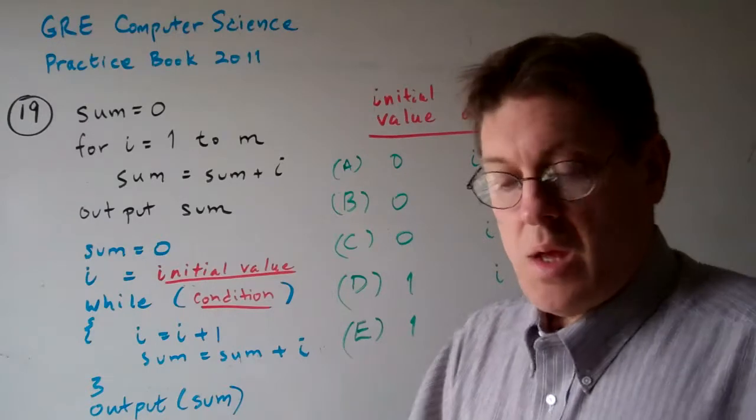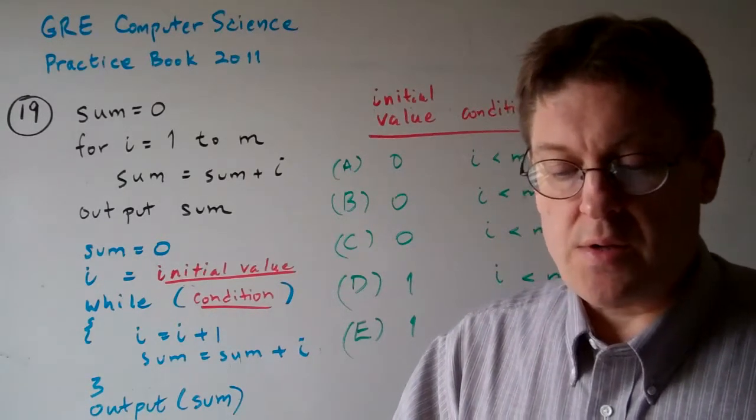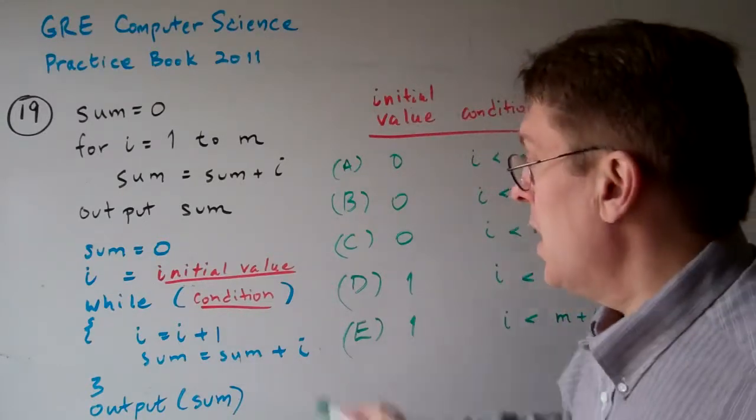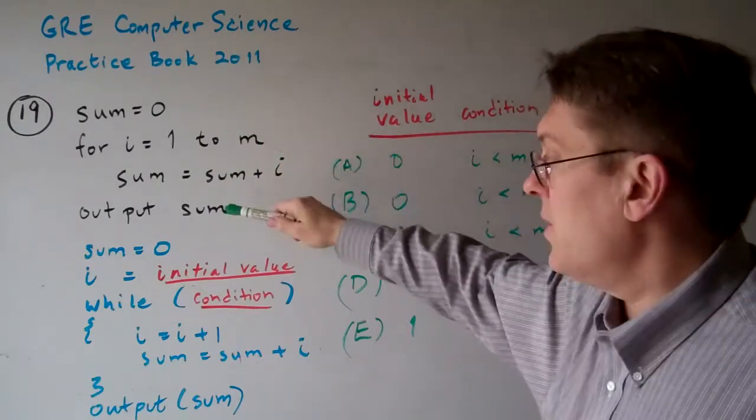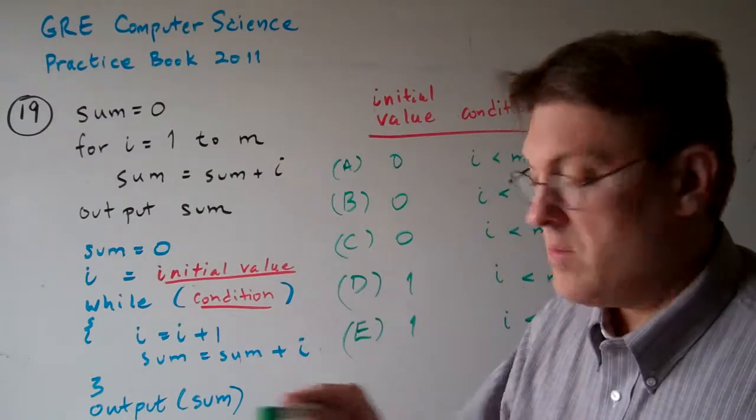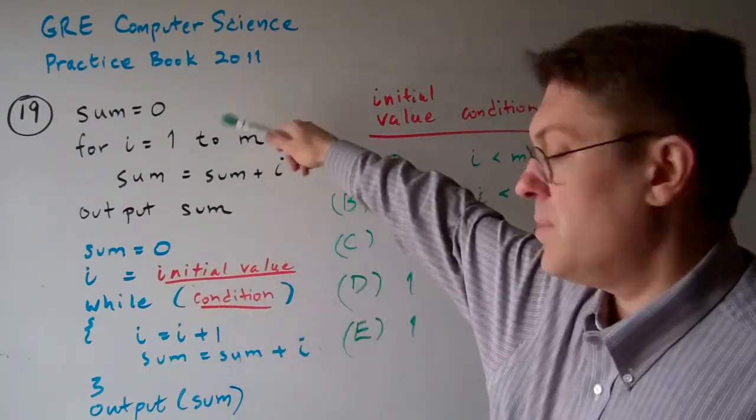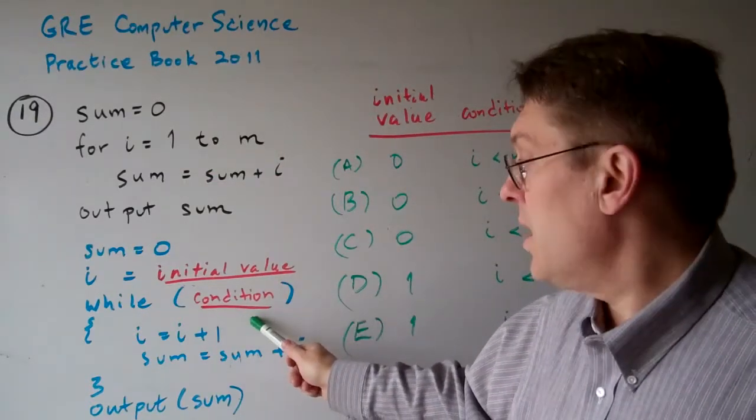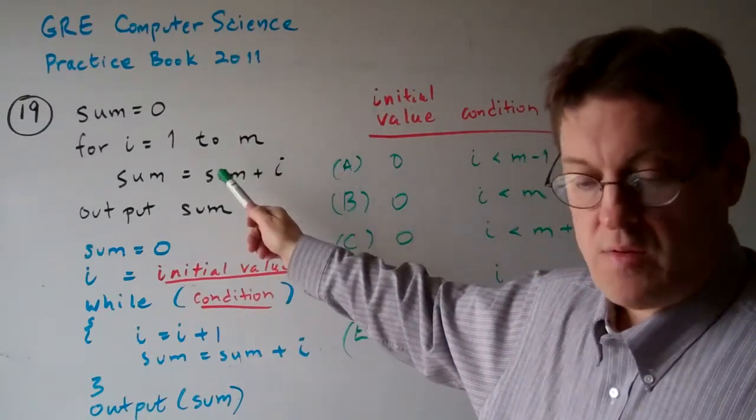Question 19. Consider the following pseudocode in which all variables are integers and m is greater than or equal to 1. The pseudocode, one set in black here and the other in blue here. This blue pseudocode is intended to produce the same output as this black pseudocode. The problem we have to figure out is what should be the initial value and what should be the condition to produce the same result.